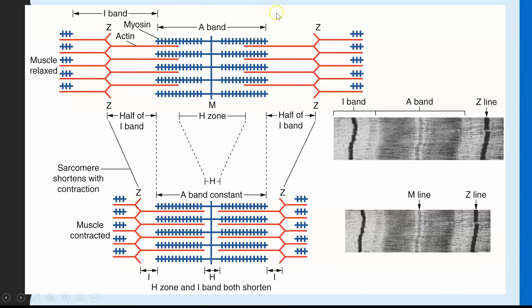On the micrograph we can see the thick versus thin filaments. The I-band, where it is just actin, is much, much paler. Where we have the myosin it's much darker, because myosin is a thicker protein. The top image shows you the sarcomere when the muscle is relaxed — myosin is shown in blue and actin is shown in red.